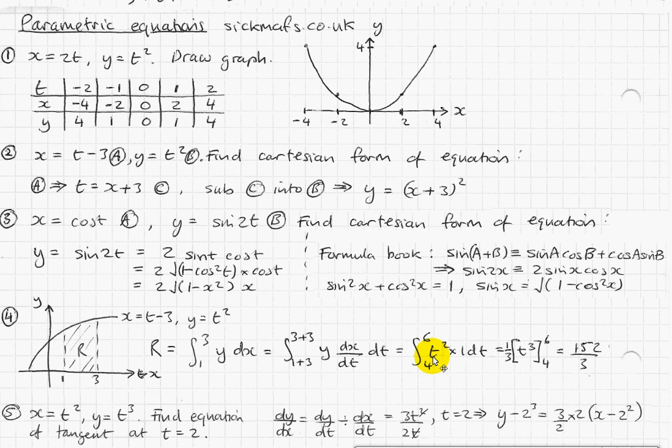So basically, you end up just integrating t squared, which is this, t cubed, 1 over 3 t cubed, between limits 6 and 4, which is equal to 152 over 3. Very straightforward.